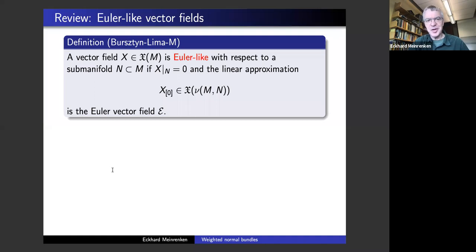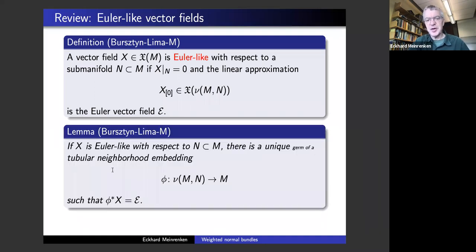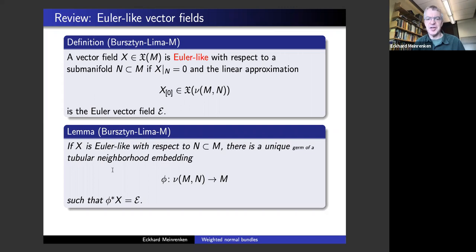The vector field X is called Euler-like if that linear approximation is the Euler vector field — the standard Euler vector field of the normal bundle — the vector field that generates scalar multiplication. The main lemma from our paper is that if you have such an Euler-like vector field relative to a sub-manifold, then it determines a unique tubular neighborhood embedding such that under this embedding, the vector field X really becomes the Euler vector field. We're really talking just about germs of tubular neighborhood embeddings — what goes on along a small neighborhood of the sub-manifold.